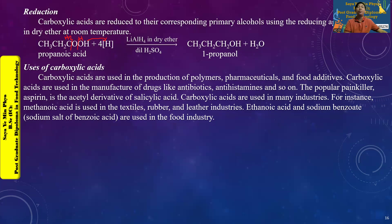A popular example is aspirin, which is a derivative of carboxylic acid. Carboxylic acids are used in many industries, including the production of plastics, surface coatings, saw marking, and oil-based products. They are also widely used in the food industry.